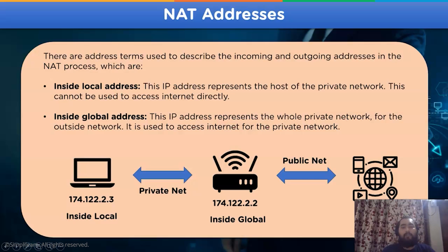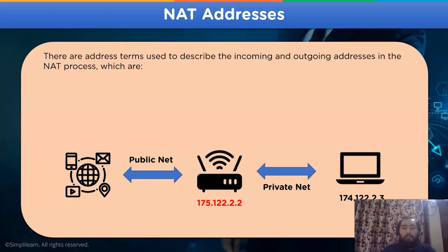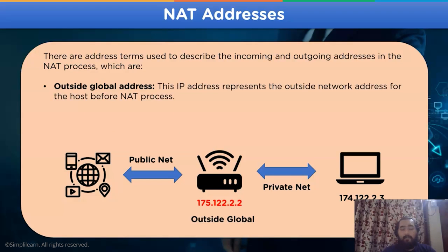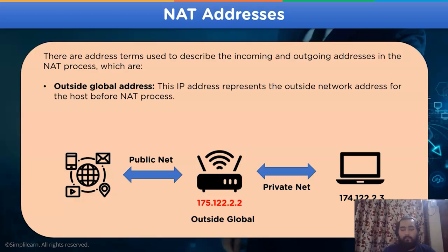Now for the remaining NAT IP addresses — when returning from a public network to the private network: the outside global address represents the outside network address for the host before the NAT process took place. Then we have the outside local address, which represents the actual address of the host on the Internet after the NAT process takes place.